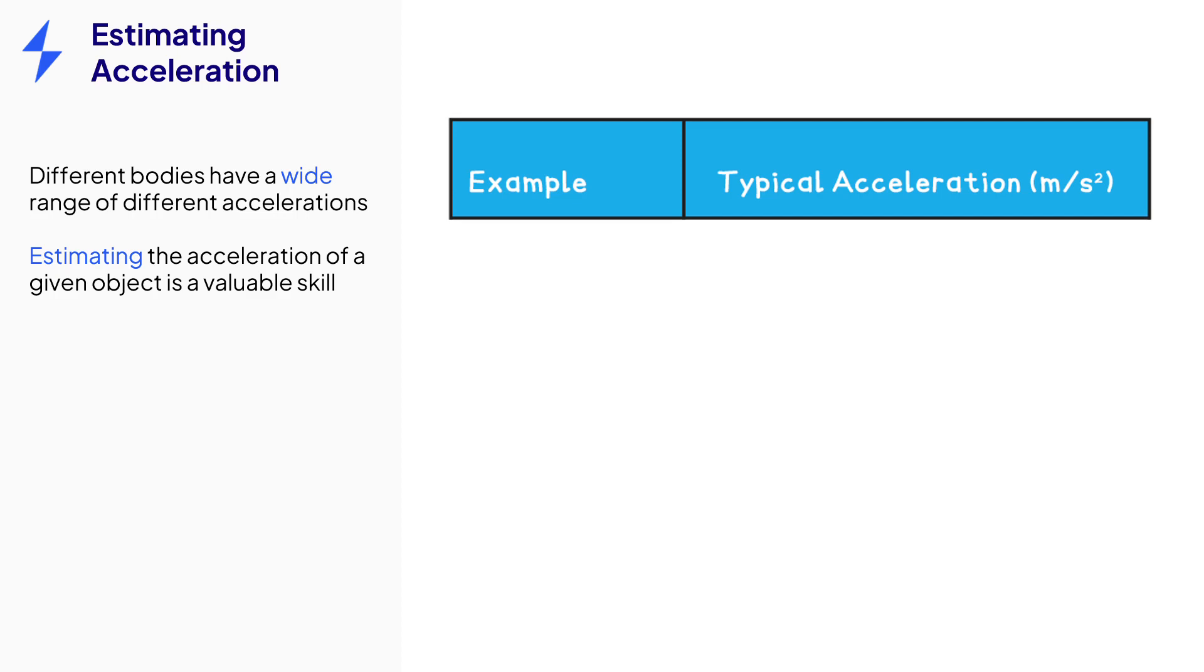Some common accelerations are as follows. A car has an acceleration of two to three meters per second squared, if driven sensibly. A falling object has an acceleration of roughly 10 meters per second squared.